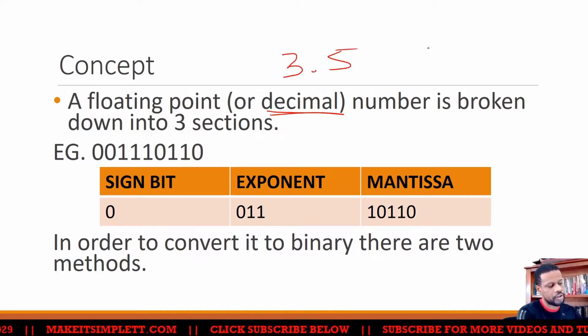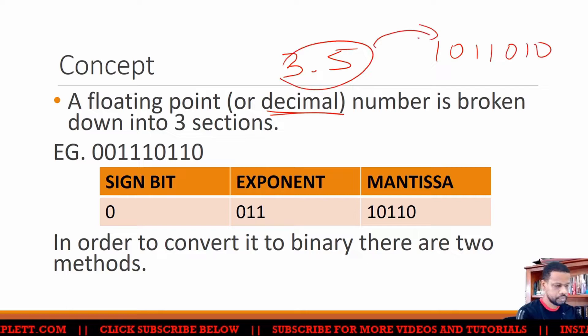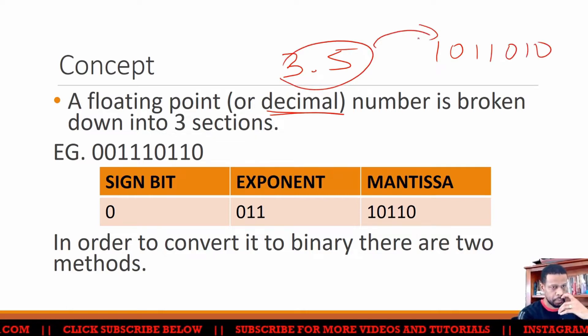But we know that as 3.5, all our computer knows is 1s and 0s. So we have to find a way to represent a decimal as a binary number.